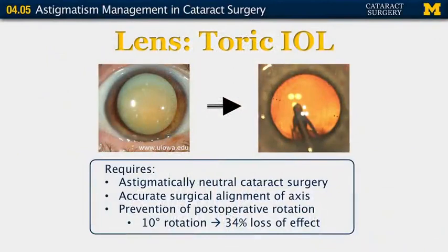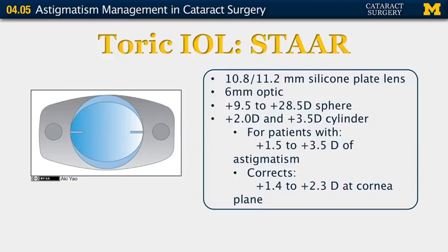Finally, we can treat corneal astigmatism with the lenses we implant into the eye at the time of cataract surgery. Planning for a toric intraocular lens requires an astigmatically neutral cataract surgery, or at least good knowledge of how much astigmatism you induce. Accurate surgical alignment of the axis is very important, as even a 10-degree postoperative rotation can lead to a one-third loss of the astigmatism correction effect. There are currently two FDA-approved toric intraocular lenses in the United States — the STAAR lens and the Alcon lens — both with specifications that can correct certain amounts of astigmatism at the time of surgery.